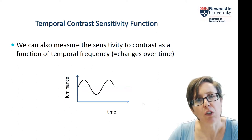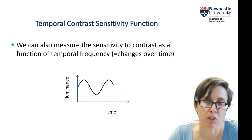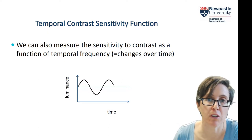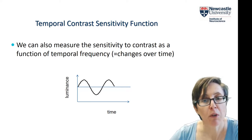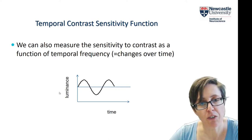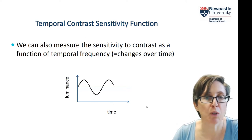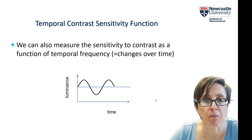Now we can also talk about the temporal contrast sensitivity function. What I've shown you so far is the spatial contrast sensitivity function, where we measured the contrast threshold for different spatial frequencies. But you can actually also present luminance that's varying as a sinusoidal function of time, and that's what you can use to get the temporal contrast sensitivity function.